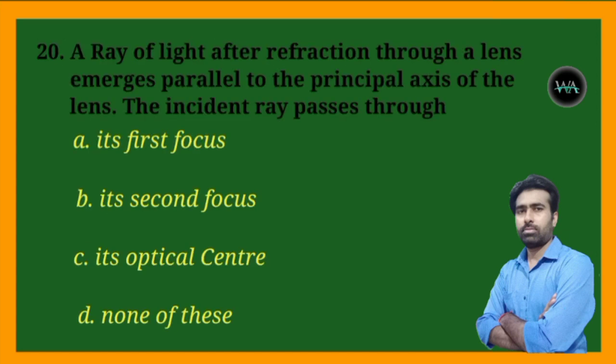Next question: a ray of light after refraction through a lens emerges parallel to the principal axis of the lens. The incident ray passes through — its first focus, its second focus, its optical center, or none of these?